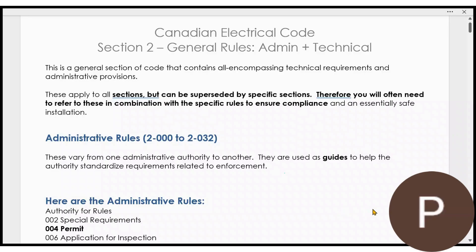Let's talk about Section 2 of the Canadian Electrical Code. Section 2 is a very special section — it has all the general rules. There are two categories of general rules: administrative rules and technical rules. In this video, we're going to talk about the administrative rules, and only two of them that are so important that absolutely everybody has to know them.